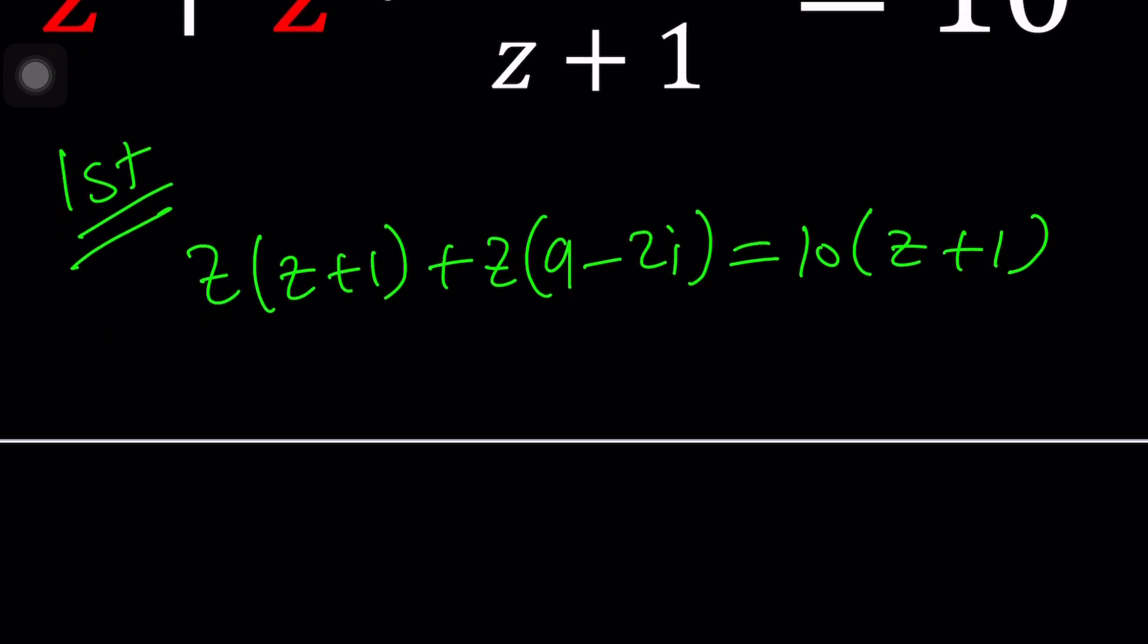That's going to give us something nice like this. Let's distribute: z squared plus z plus 9z - sorry, that's how I write my z's so they don't look like 2's - and then minus 2iz equals 10z plus 10.